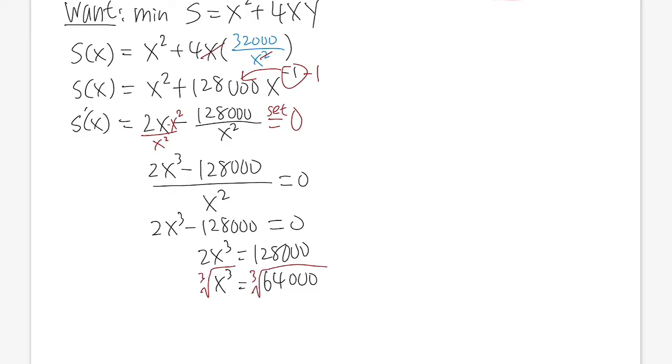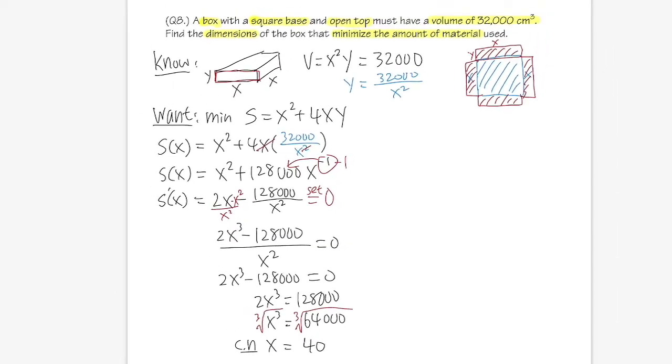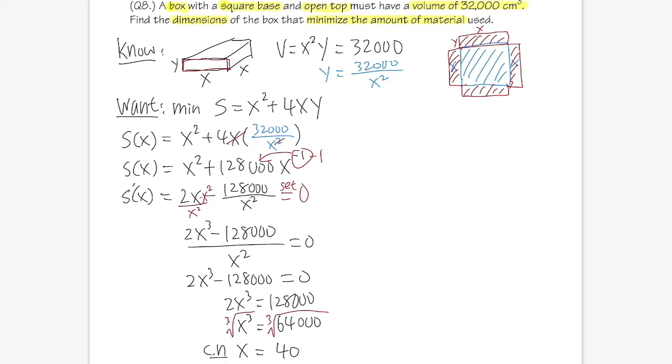When you take the cube root on both sides, you don't worry about the plus or minus. So this right here, x will be equal to 40, and this is the critical number that we care about.